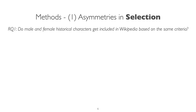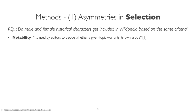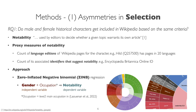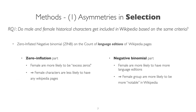For the first research question about asymmetries in the selection process, we had a look at notability, since it was used to decide whether a given character warrants its own article. We adopted two approximations of notability. One of them is the count of language editions. We used zero-inflated negative binomial regression to investigate gender's role on notability. The zero-inflation part told us female characters are less likely to have any Wikipedia pages because they are more likely to be excess zeros.